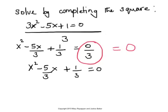The next step is to keep the binomial having x squared term and the x term on one side and move the constant term to the other side. And that gives x squared minus 5x divided by 3 is equal to negative 1 third.